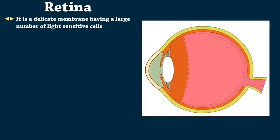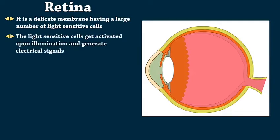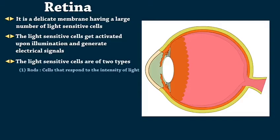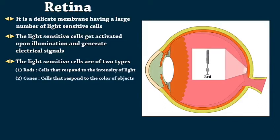Retina is a delicate membrane having a large number of light-sensitive cells. The light-sensitive cells get activated upon illumination and generate electrical signals. The light-sensitive cells are of two types: Rods, cells that respond to the intensity of light, and cones, cells that respond to the color of objects.